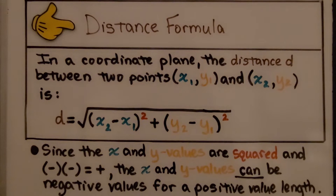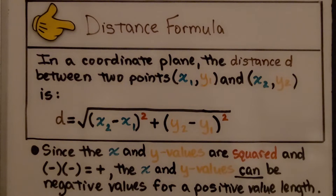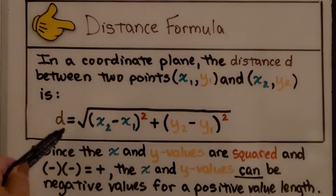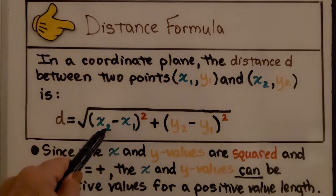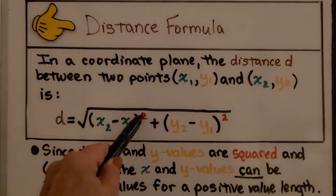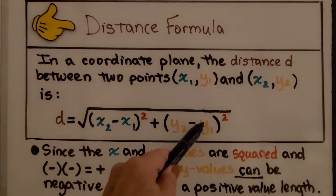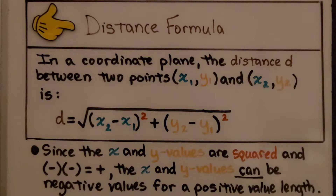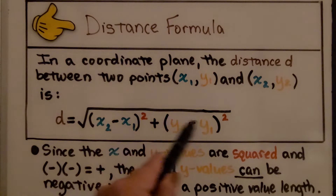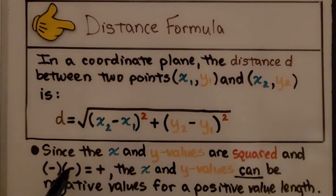For your notes, this is the distance formula. In a coordinate plane, the distance d between two points, x sub 1, y sub 1, and x sub 2, y sub 2, is d equals the square root of (x sub 2 minus x sub 1) squared plus (y sub 2 minus y sub 1) squared. Since the x and y values are squared, and a negative times a negative equals a positive, the x and y values can be negative and still yield a positive length — because a length can only be a positive number.